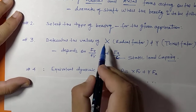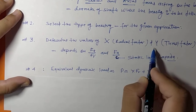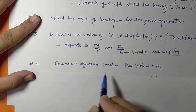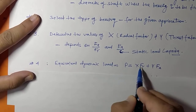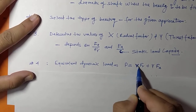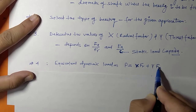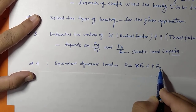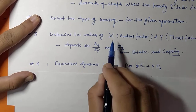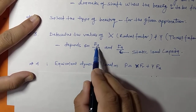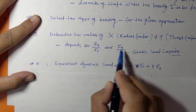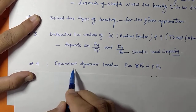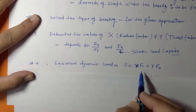After determining the values of X and Y, we calculate the equivalent dynamic load using the formula: P = X·FR + Y·FA, where FR is the radial load and FA is the axial load. X and Y are selected from the design data book based on the ratios FA/FR and FA/C₀.